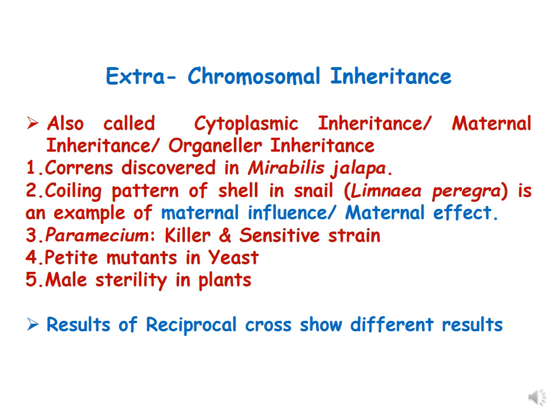In this lecture we are going to discuss two examples. The first example is leaf variegation in Mirabilis Jalapa, and the second example is shell coiling in snail. The other examples will be discussed in the second video lecture of extrachromosomal inheritance.